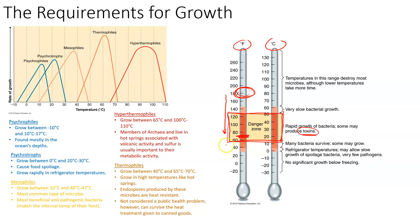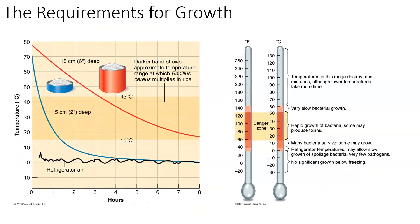Past the danger zone, you further cool food by putting it in the refrigerator. We are not going below freezing because that's the purpose of the freezer, not the refrigerator. When you cool down to refrigerated temperatures, it slows the growth of organisms but it doesn't stop the growth of organisms — the only thing that will stop the growth of organisms is putting it in the freezer. That's why food in the freezer has a longer shelf life than food sitting in your refrigerator.